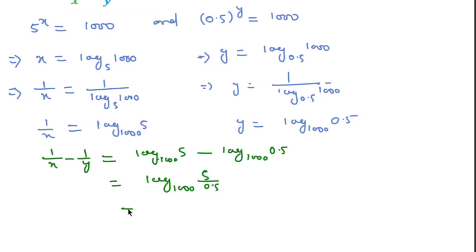We can write log base 1000 of (5/0.5). If we remove the decimal point, 5 over 0.5 equals 10.